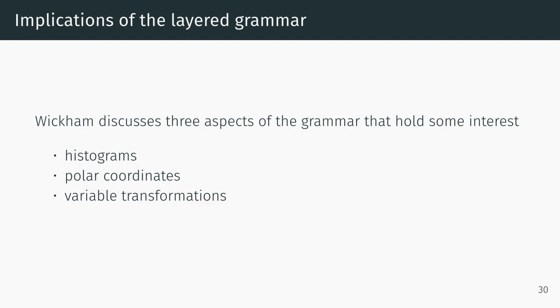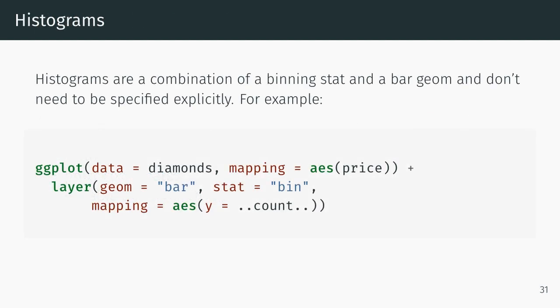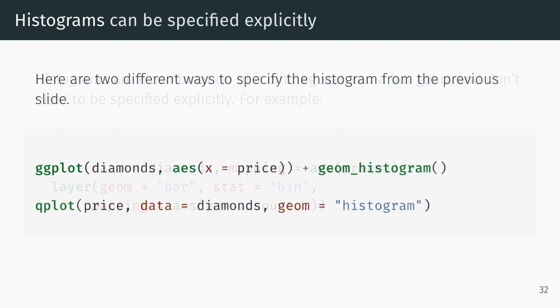Wickham discusses the implications of the layered grammar. There are three that are significant: histograms, polar coordinates, and variable transformations. Histograms are a combination of a binning stat and a bar geom and don't have to be specified explicitly. Here is a ggplot specification for a histogram that doesn't mention the word histogram at all but creates a perfectly valid histogram. Here are two other ways of specifying the same histogram, both of which do mention the term histogram.